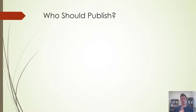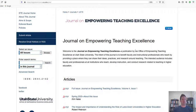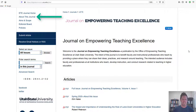To begin, I ask you: who should publish? In order to determine who should publish in any specific journal, you should thoroughly explore the journal's webpage to find a description of its audience, aims, scope, and so forth. For example, if you click the About This Journal link on the homepage for the Journal on Empowering Teaching Excellence, you can find important information about this journal.